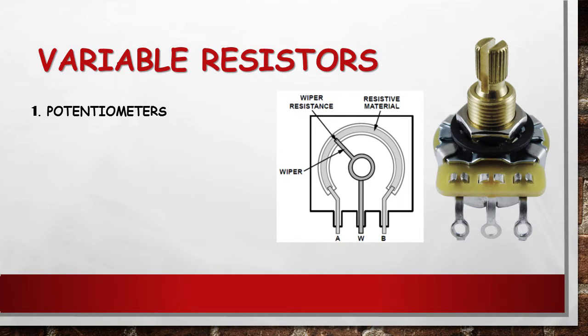A potentiometer or pot is a three terminal resistor with a continuously adjustable tapping point controlled by rotation of a shaft or knob or bi-linear slider. It is called a potentiometer because it can be connected as an adjustable voltage divider to provide a variable potential at the terminal connected to the tapping point. A volume control for an audio device is a common use of a potentiometer.